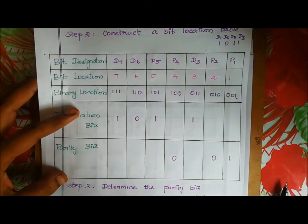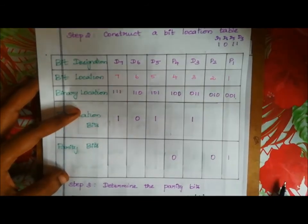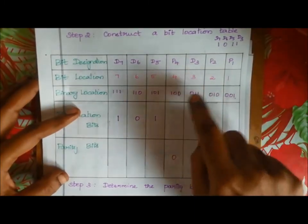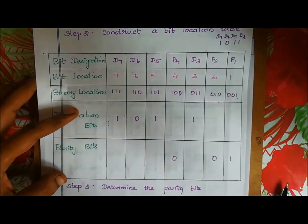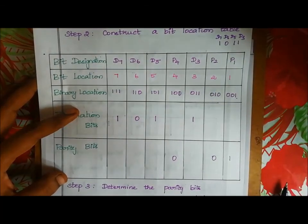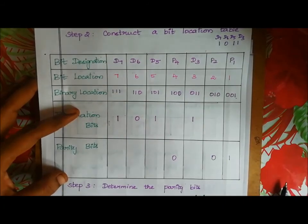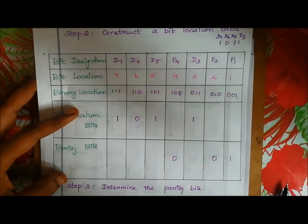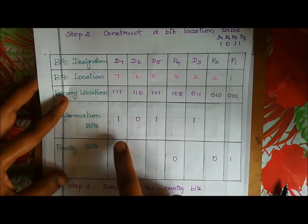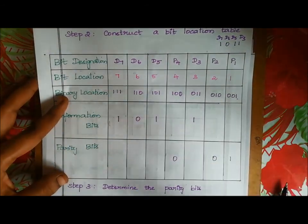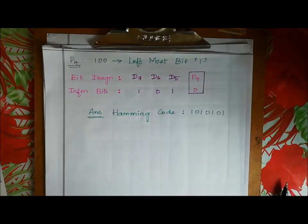So the parity bit values are: P1=1, P2=0, P4=0. Combining parity bits and information bits in order, the final Hamming code is 1010101. This is the 7-bit even parity Hamming code for binary word 1011.